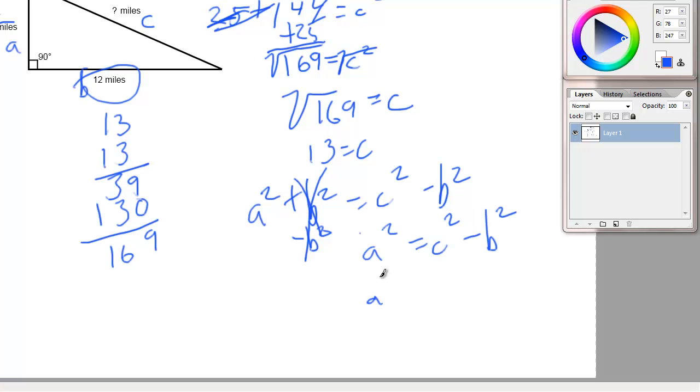So, now you just plug in what you know. You don't know a yet, but you know that c is 13 squared minus b, which is 12 squared. So, a squared equals 13 squared, which is 169 minus 12 squared, 144.